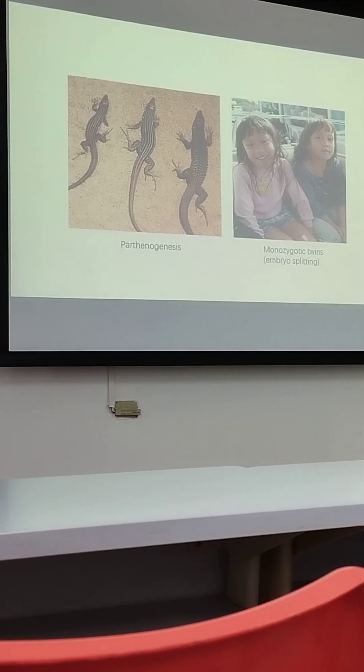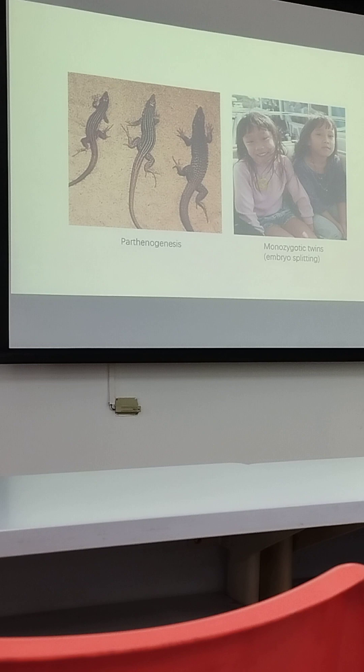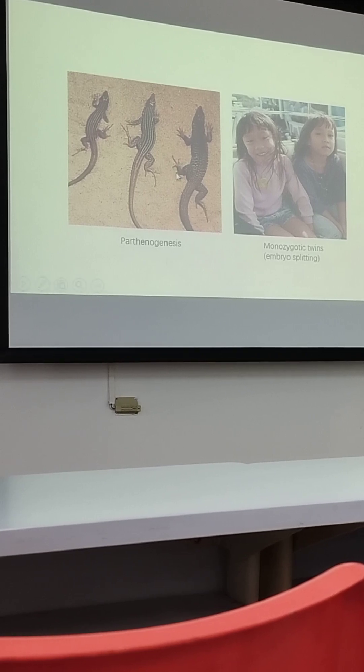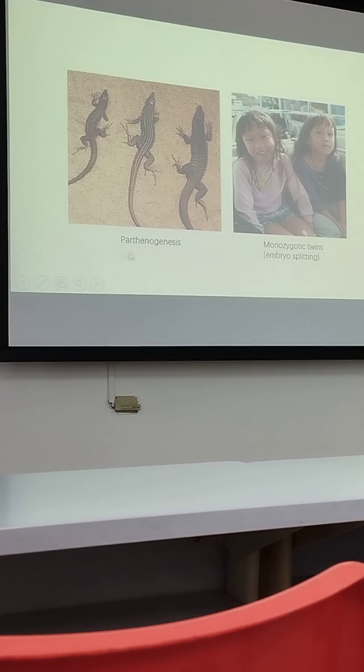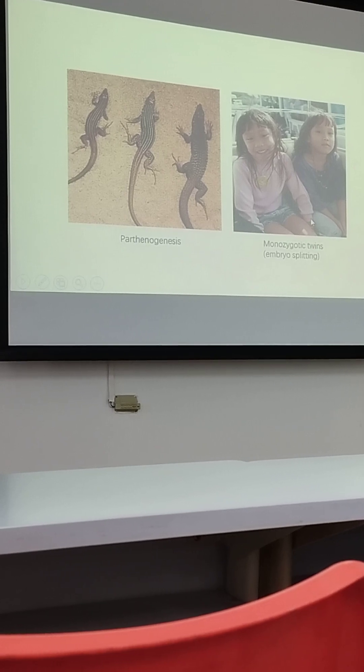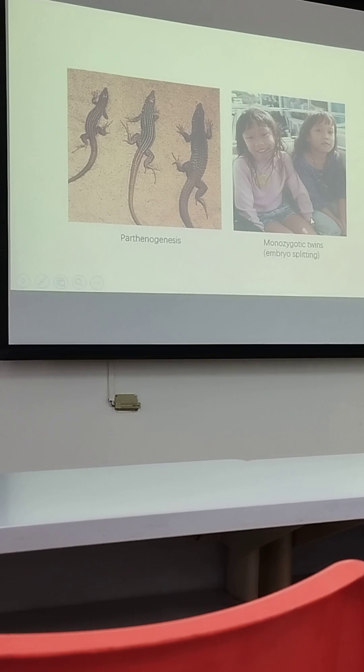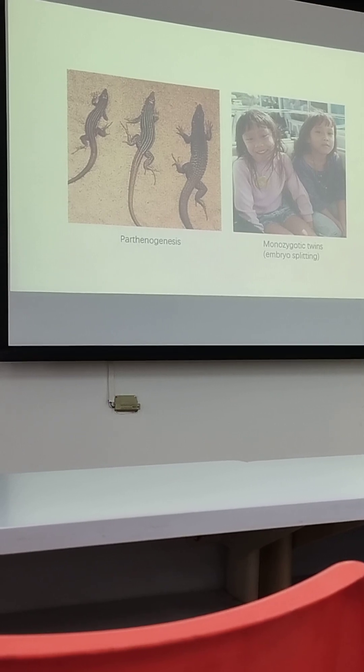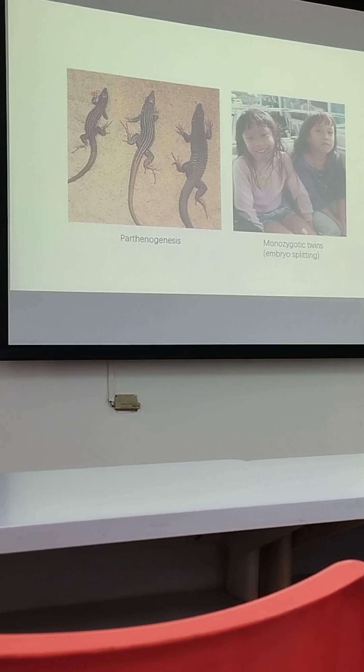So actually, there are naturally occurring clones in the world, such as parthenogenesis and also identical twins. The twins are totally genetically identical. So that is the clone in the real world.